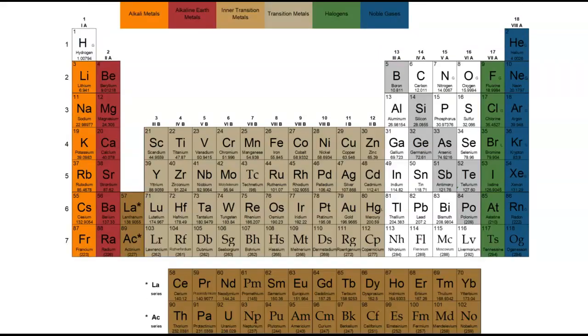The last bits of vocabulary you should know are the names of a few special groups. The group 1 elements, with the exception of hydrogen, are collectively known as the alkali metals. They are incredibly reactive and not found in nature by themselves. The group 2 metals are the alkaline earth metals. They are also pretty reactive, but somewhat more stable than the alkali metals.